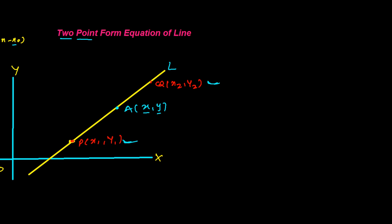Now if we analyze this figure, what we can see is that the slope of line PQ is the same as the slope of line AQ and the same as line AP. Because all those line segments — AP, AQ, and PQ — all have the same inclination of line L. Everybody is making the same angle theta.